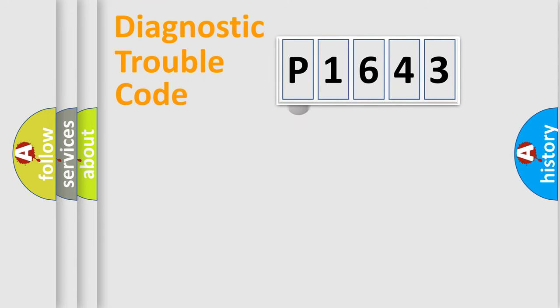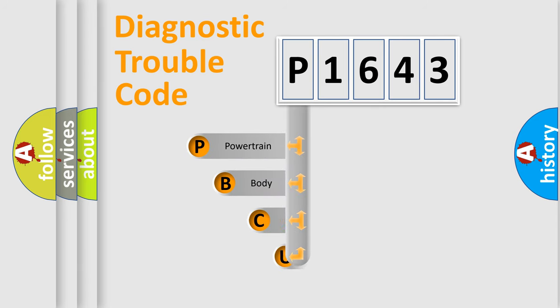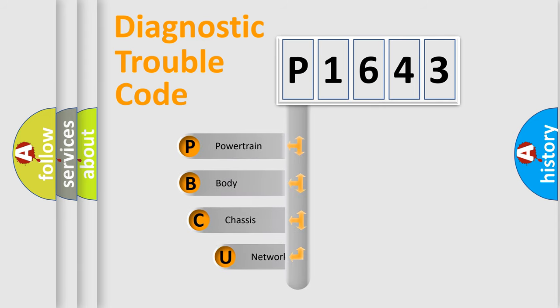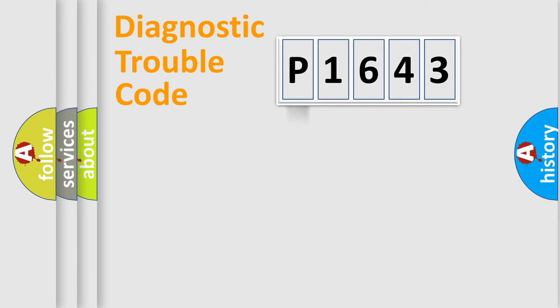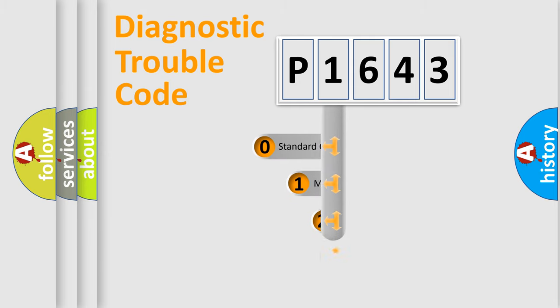First, let's look at the history of diagnostic fault code composition according to the OBD2 protocol, which is unified for all automakers since 2000. We divide the electric system of the automobile into four basic units: powertrain, body, chassis, and network. This distribution is defined in the first character of the code.